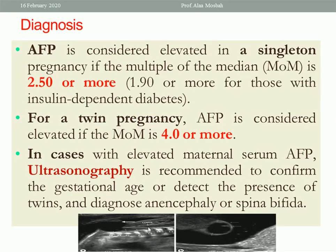Alpha-fetoprotein serum level is considered elevated in a singleton pregnancy if the multiple of the median (MOM) is 2.5 or more, or 1.9 or more for those with insulin-dependent diabetes. For twin pregnancy, alpha-fetoprotein is considered elevated if the MOM is 4 or more. In cases with elevated maternal serum alpha-fetoprotein, ultrasonography is recommended to confirm gestational age, detect twins, and diagnose anencephaly or spina bifida. As seen in the picture, this is the defect and the meningocele diagnosed by ultrasound during pregnancy.